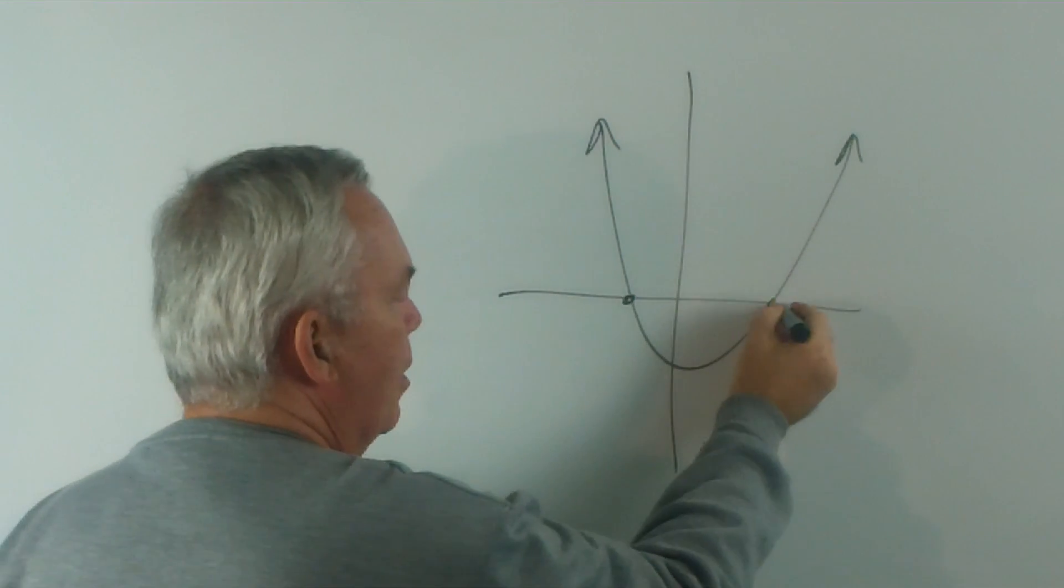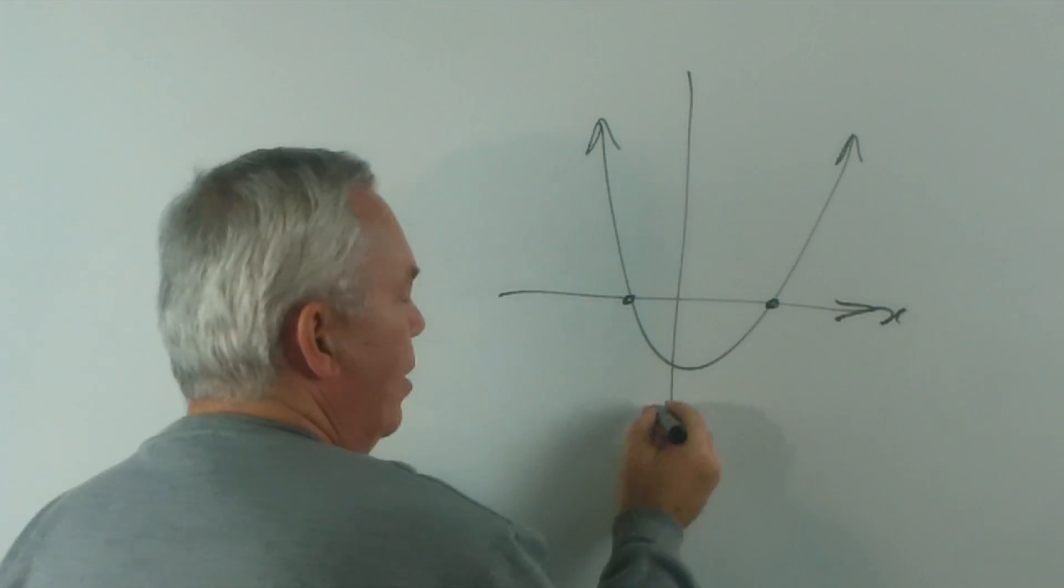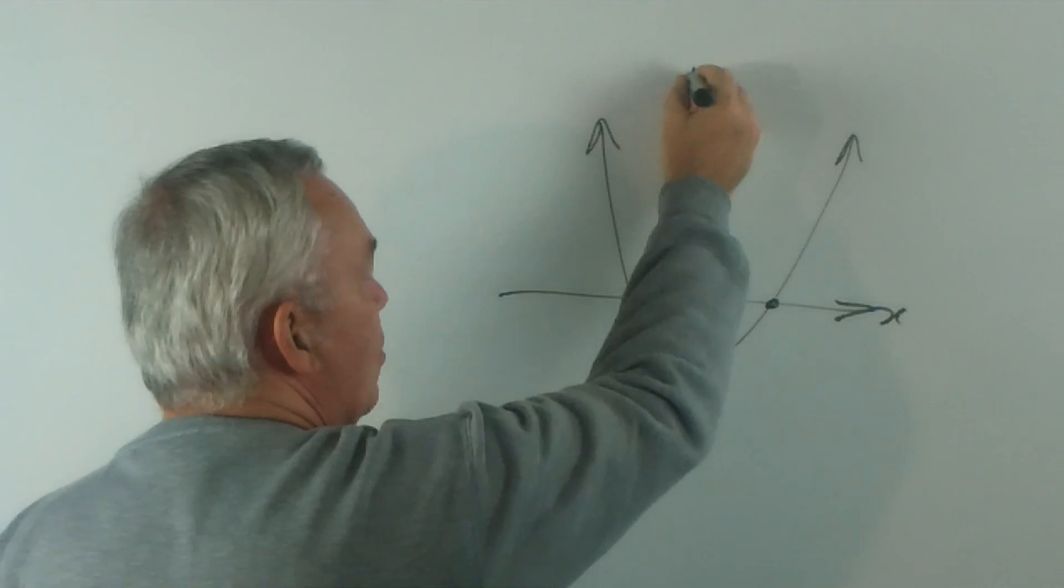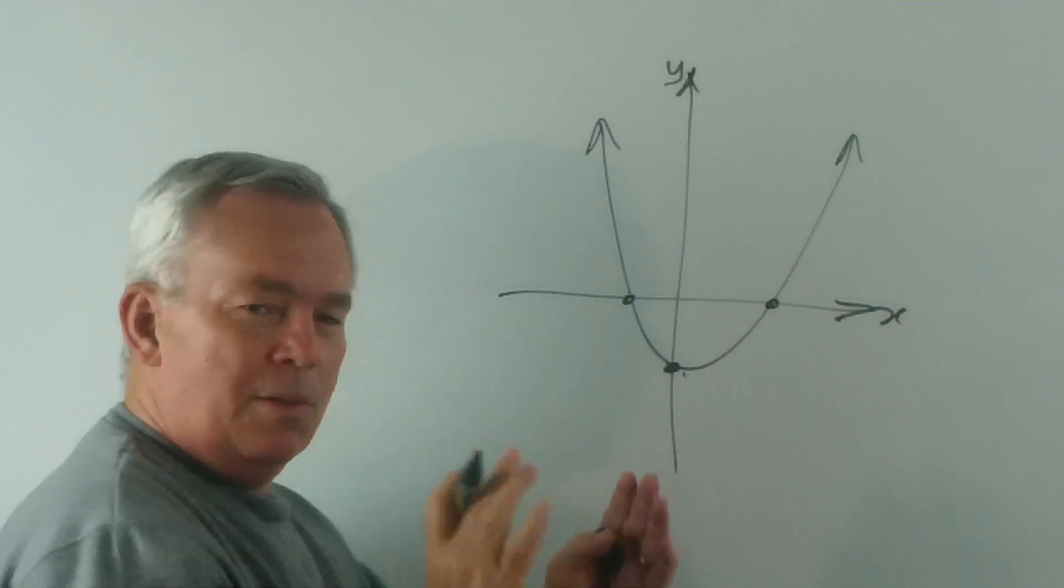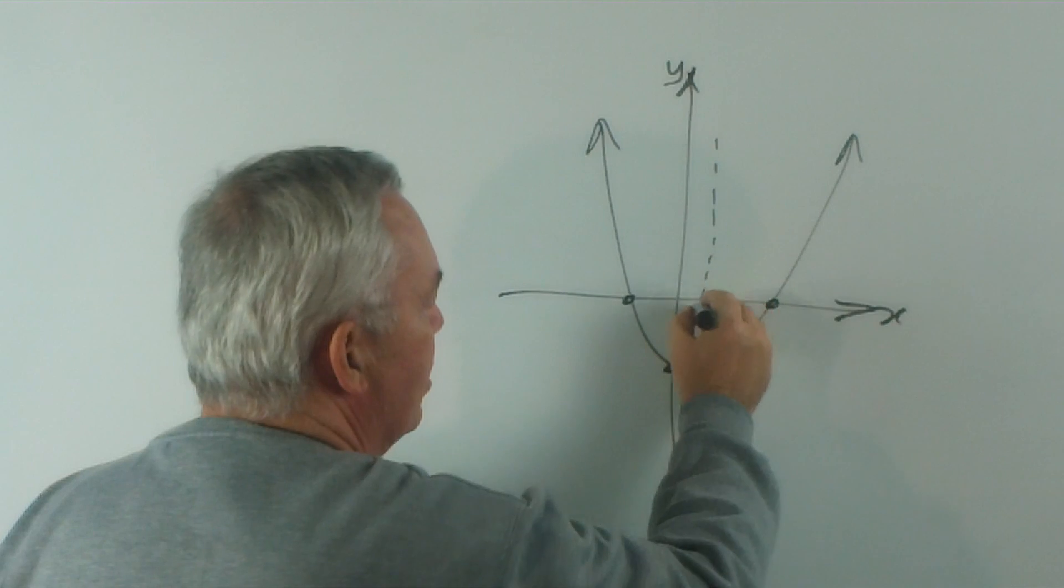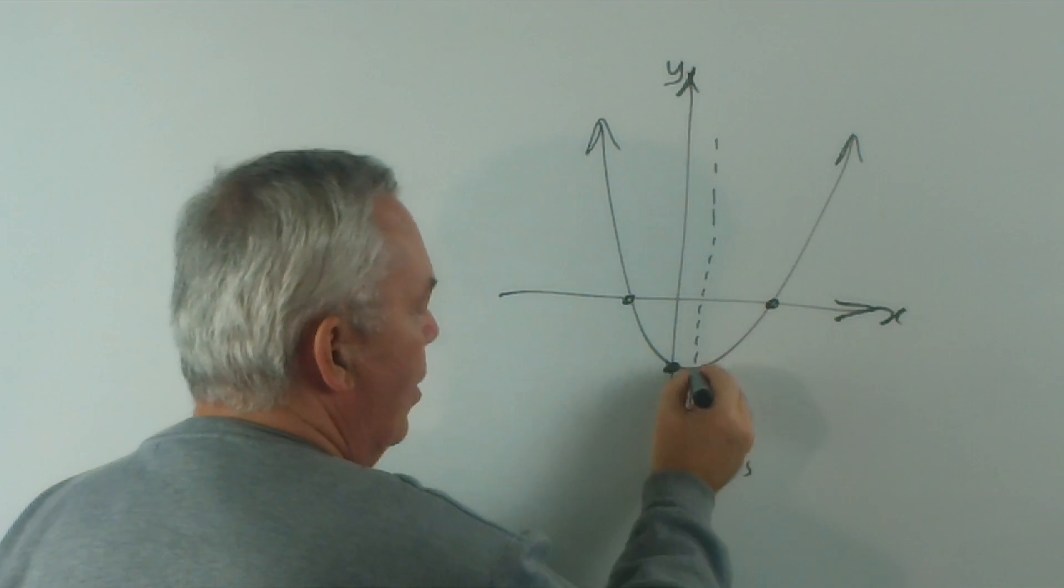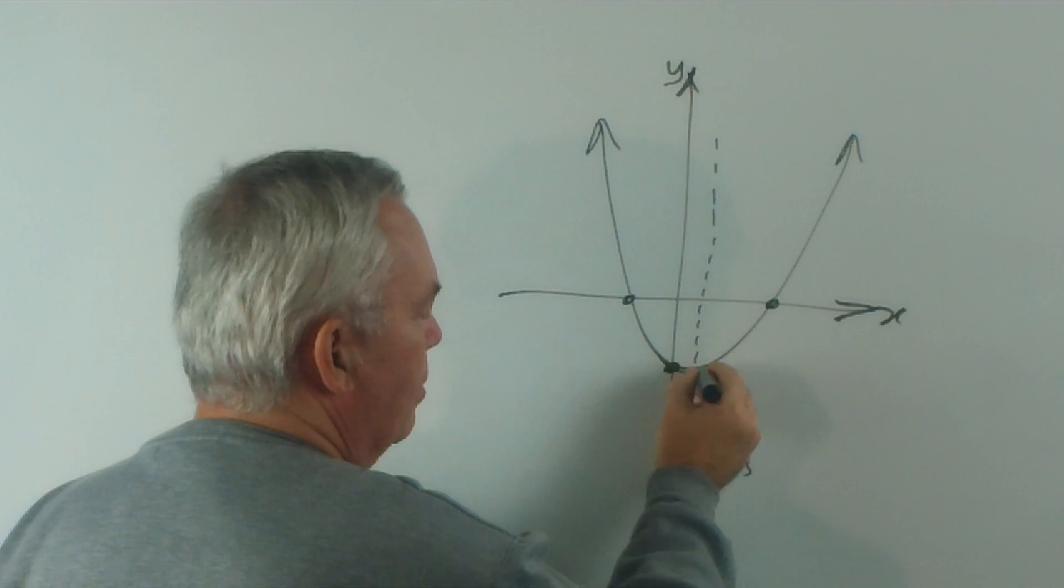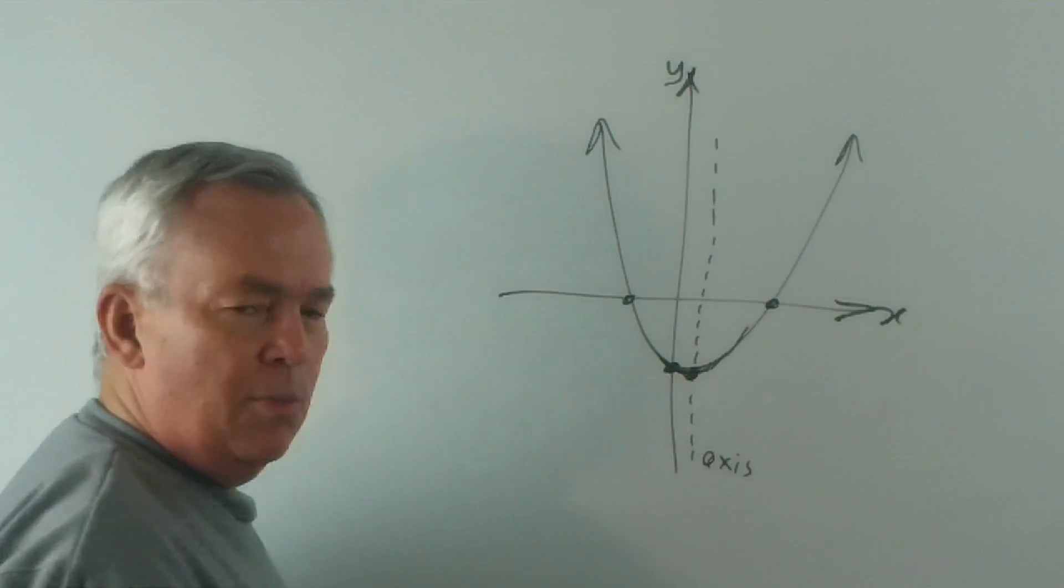We're interested in where the parabola crosses the x-axis, where it passes through the y-axis, and because a parabola is symmetric, where the axis of symmetry might be. We're also interested in the vertex—the lowest point on the parabola.